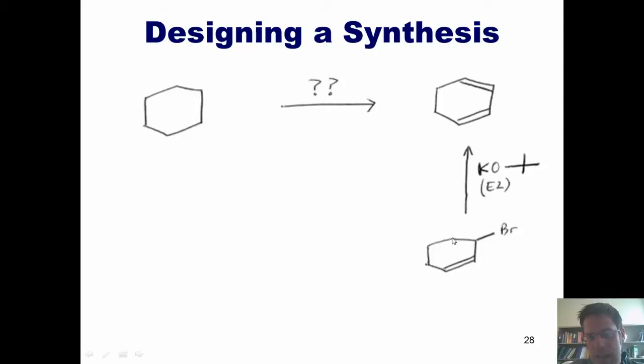In the forward direction, if this base grabbed a hydrogen off of this position, pumped the electrons down here to swing like a trapdoor and kicked off the bromide, E2 style, it would indeed give me this diene. You might ask, how in the world could I make this product?